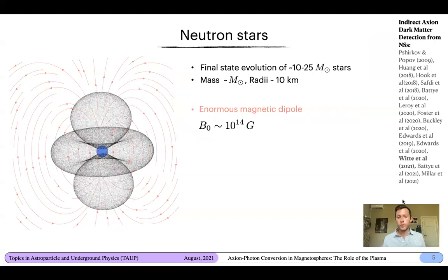Now, for this reason, we want to consider neutron stars. Neutron stars, as a reminder, are the final state evolution of 10 to 25 solar mass stars. They have a mass of about a solar mass, and that's concentrated into a radius of about 10 kilometers. Neutron stars have the largest magnetic field strengths known in the universe. Typically, near the surface of newly born neutron stars, you can reach and exceed magnetic field strengths of 10 to the 14, maybe 10 to the 15 Gauss. Of course, it's enormously large.